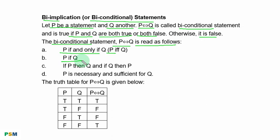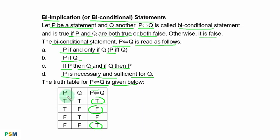The biconditional 'P if and only if Q' can also be expressed as: P if Q; if P then Q and if Q then P; or P is necessary and sufficient for Q. The truth table shows: when both P and Q are true the outcome is true; when both are false the outcome is true; when P is true and Q is false the outcome is false; when P is false and Q is true the outcome is also false.